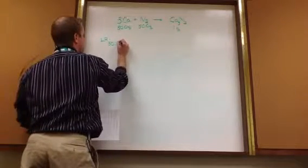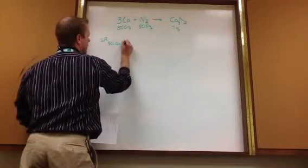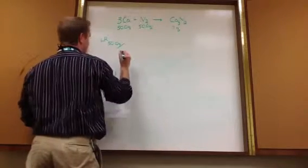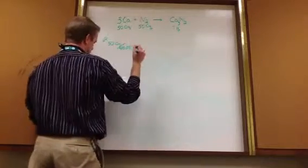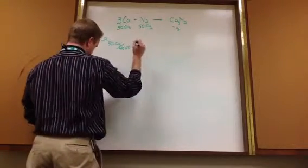So, 50.0 grams of calcium. You divide that by the molar mass of calcium, which is 40.08. And you get a number which is 1.25.